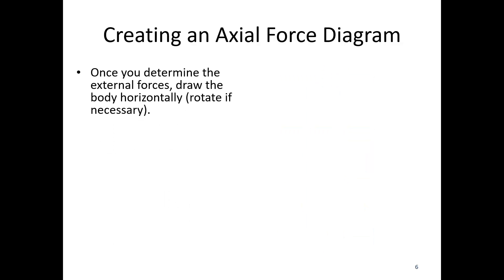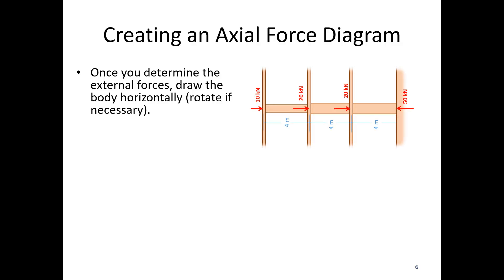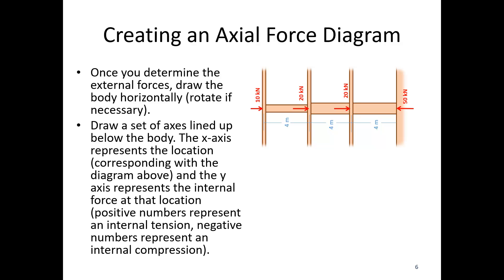Next, once you determine the external forces, you're going to draw the body horizontally — rotating if necessary. So I'm taking my column and putting it on its side here; it's going to make plotting easier. Then below that you draw a set of axes lined up below the body. The x-axis represents location, lined up with the diagram above, and the y-axis represents the internal force at that location. Positive numbers represent internal tension; negative numbers represent internal compression.